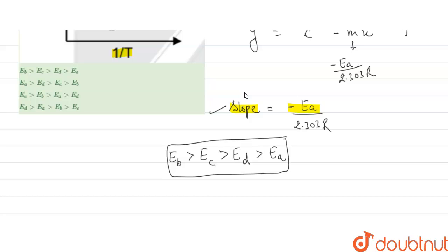By this relation, we can solve this equation and get the order of activation energy. By checking these options, we can see clearly that option A is our answer: Eb greater than Ec greater than Ed greater than Ea. This is our answer.